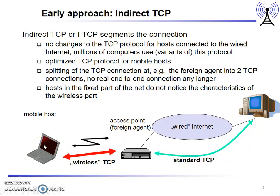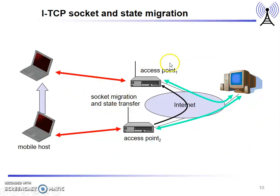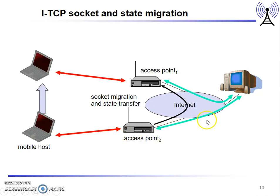The access point accesses a foreign agent. When a handover takes place, all data needs to be transferred from the old access point to the new access point. This state transfer includes information such as sequence number, address, and port number. The current TCP connection sockets are also migrated to the new access point during handover.